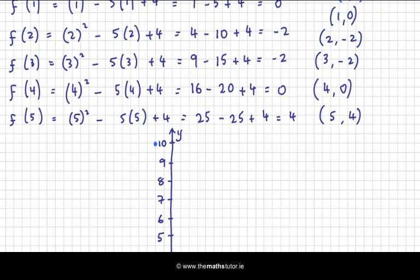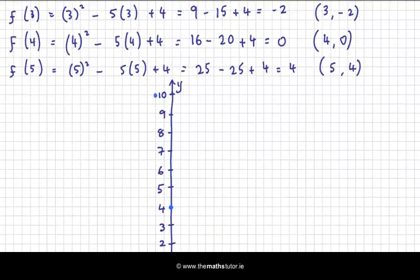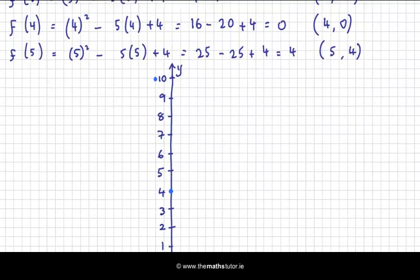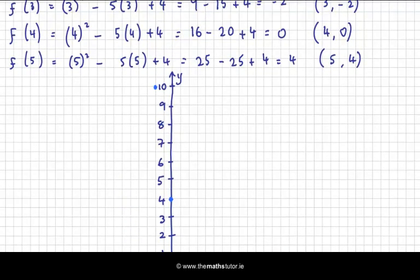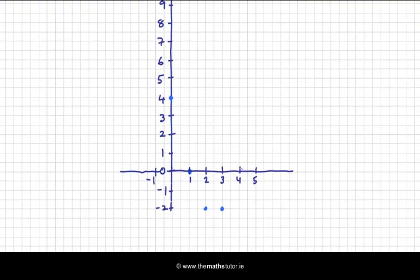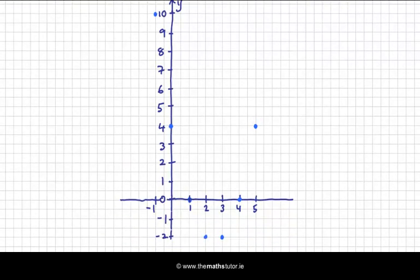2 is mapped on to minus 2. 3 is mapped on to minus 2. So across to 3 and down to minus 2. 4 is mapped on to 0. And 5 is mapped on to 4. So across to 5 and up to 4. So I have all of my ordered pairs plotted.